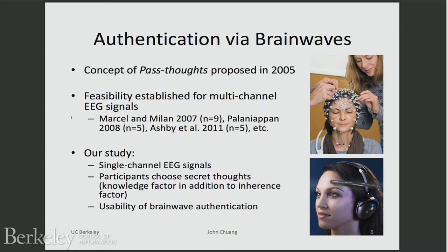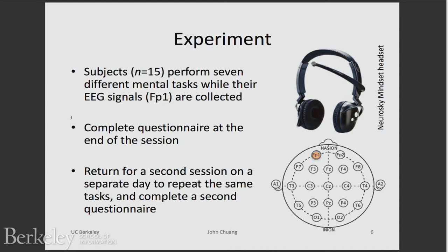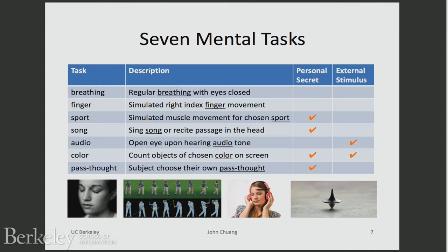What we did was: number one, take a single-channel consumer-grade device. Number two, allow participants to choose their own secret thought — to make it analogous to choosing your own password, different from just putting your fingerprint on a sensor. And number three, interrogate to what extent users will find this technology usable — something they will actually use. We brought in a pool of subjects, had them put on the device, recorded their signals while they performed a variety of mental tasks, and importantly had them come back more than a week later and repeat the process to see how those signals may or may not change over time.